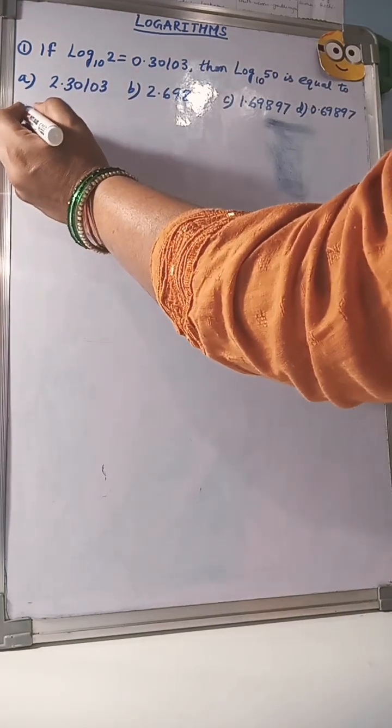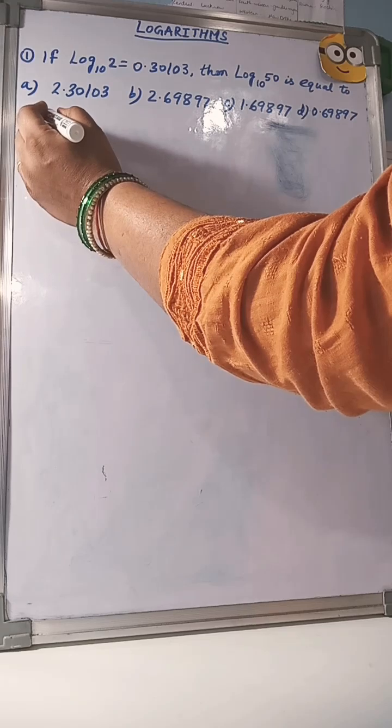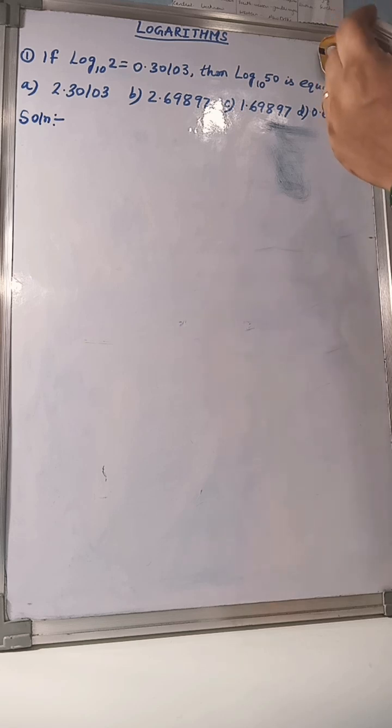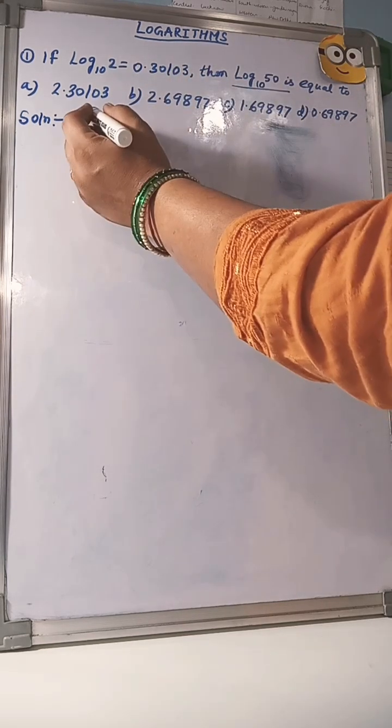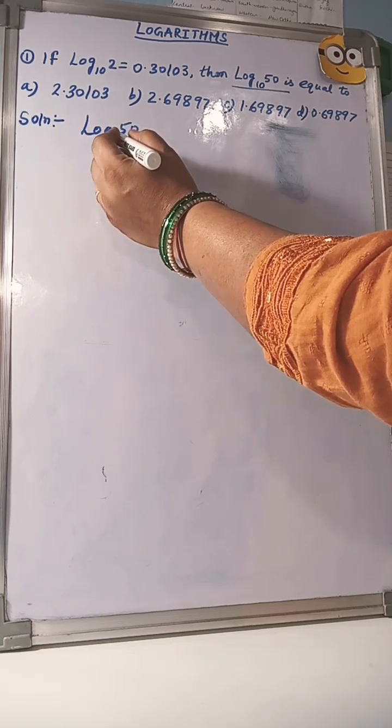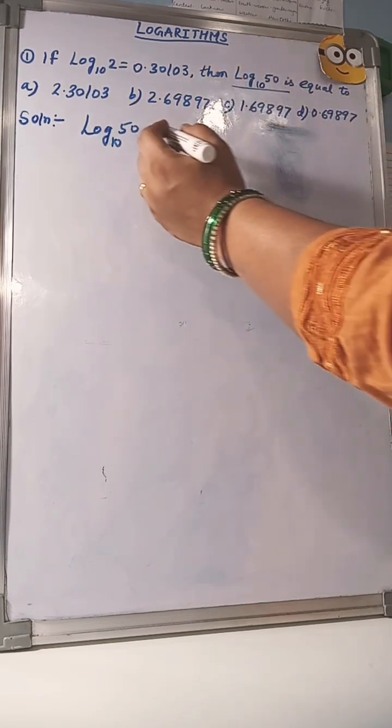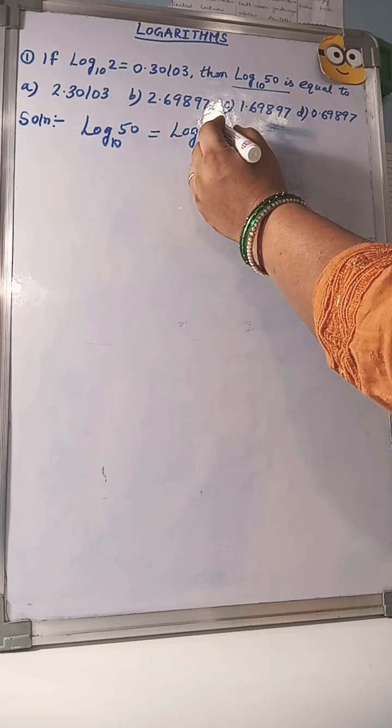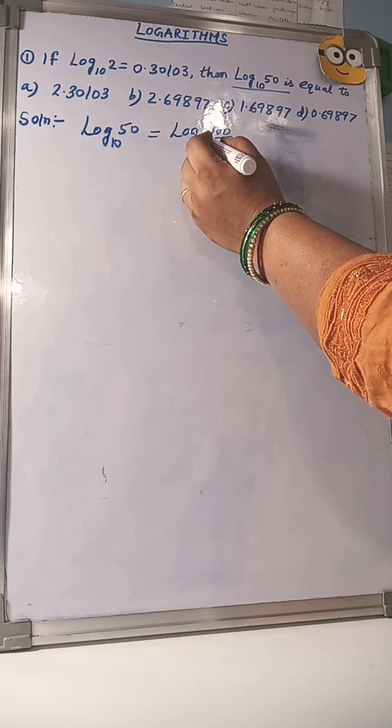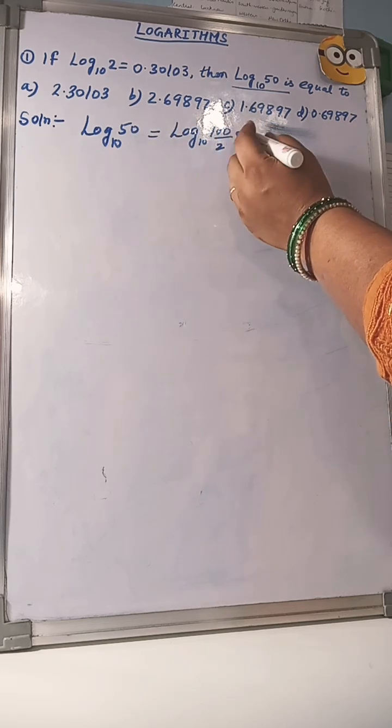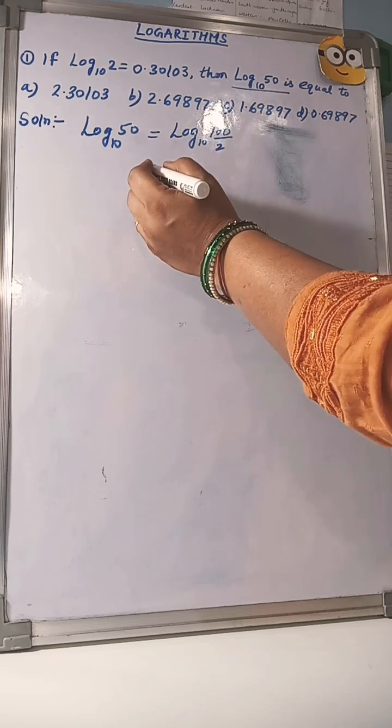So, how to solve this question? Solution: Take log 50 to the base 10. You can write this as log(100/2) because 50 equals 100 divided by 2. When we divide this, 50 will come.